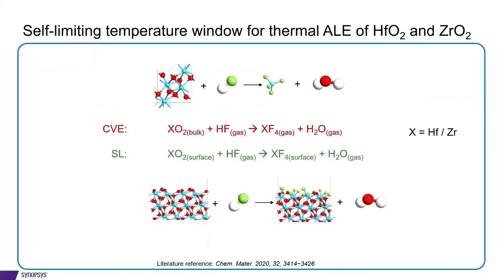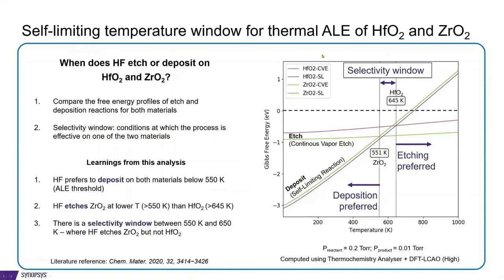Now we can repeat this process for both etch reactions of hafnia, self-limiting reactions of hafnia, etch reactions of zirconia, self-limiting reactions of zirconia, and get the plots.